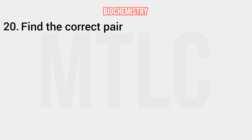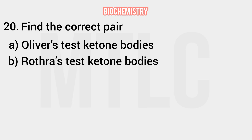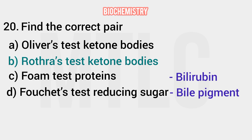Find the correct pair. Oliver's test — ketone bodies. Rothera's test — ketone bodies. Foam test — proteins. Fawcett's test — reducing sugar. The correct pair is Rothera's test for ketone bodies. The wrong answers: Fawcett's test is actually for bile pigments, Foam test is for bilirubin, Oliver's test is for bile salts, and Rothera's test is for ketone bodies.